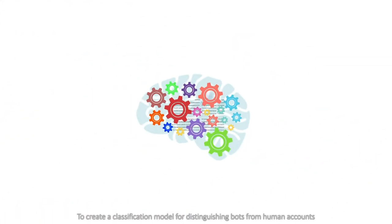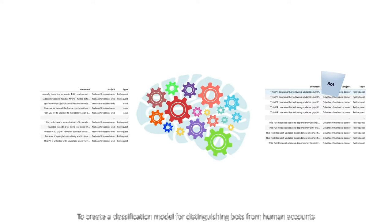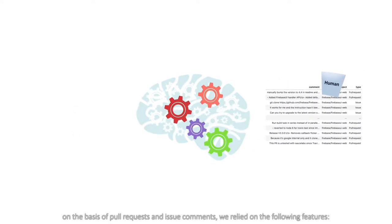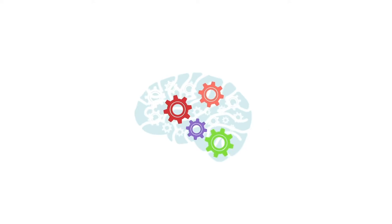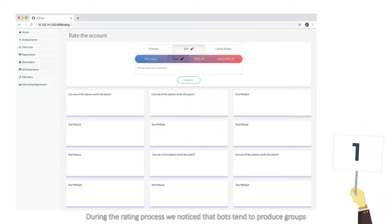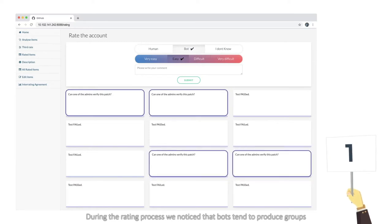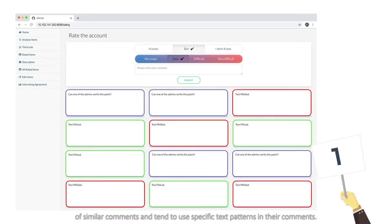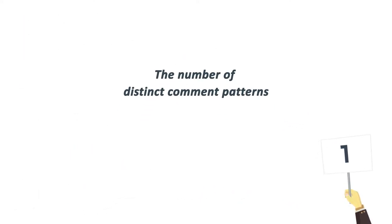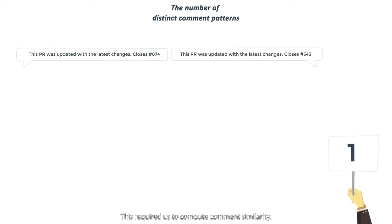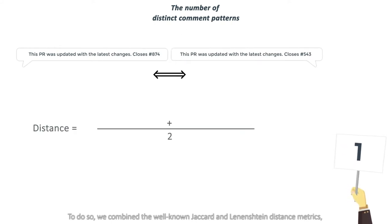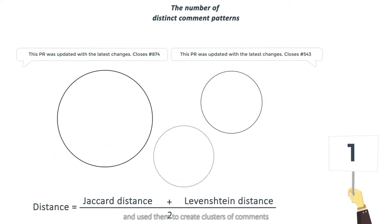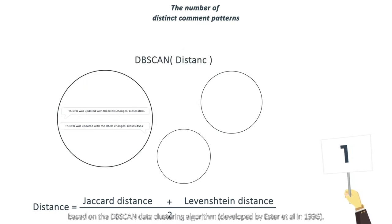To create a classification model for distinguishing bots from human accounts on the basis of pull request and issue comments, we relied on the following features. During the rating process, we noticed that bots tend to produce groups of similar comments and tend to use specific text patterns. Therefore, the first feature we used was the number of distinct comment patterns. This required us to compute comment similarity by combining the well-known Jaccard and Levenshtein distance metrics and using them to create clusters of comments based on the DBSCAN data clustering algorithm.